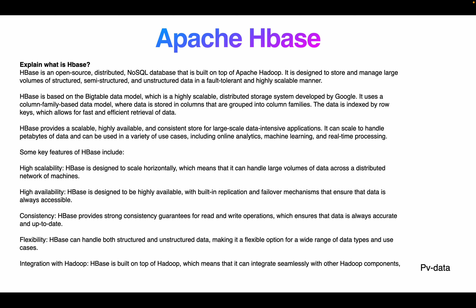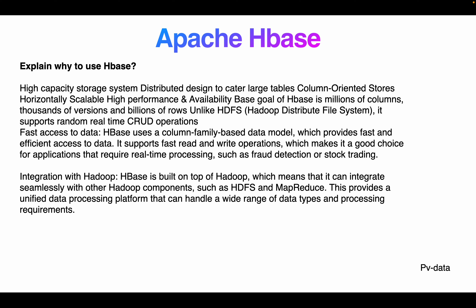HBase provides scalable, highly available, consistent storage for large-scale data-intensive applications. It can handle petabytes of data and can be used for a variety of use cases including online analytics, machine learning, and real-time processing. Key features of HBase include: high scalability — HBase is designed to scale horizontally across a distributed network; high availability — with built-in replication and failover mechanisms; strong consistency guarantees for read/write operations; flexibility to handle both structured and unstructured data; and seamless integration with other Hadoop components.